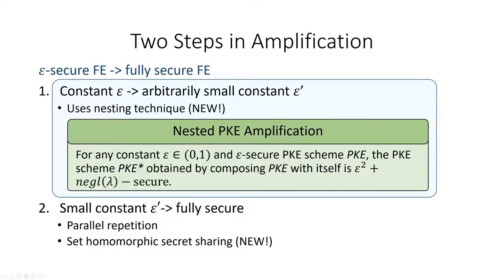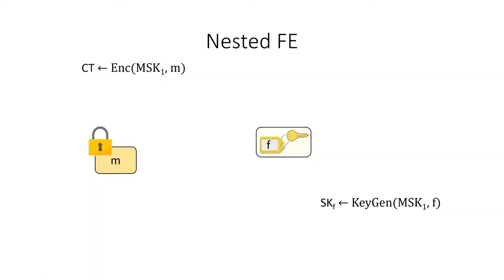Instead, I will focus the remainder of this talk on our first transformation. One of the nice things about our first transformation is that it uses a new technique that I will be able to explain reasonably fully in the remaining time. This technique also conveys a few of the important insights used in our second, more complex transformation. For our first transformation, we amplify by nesting our FE. So how do we nest an FE scheme?